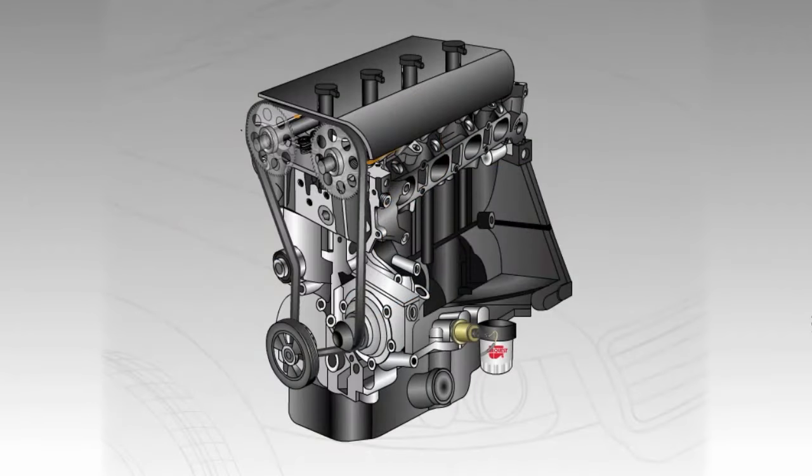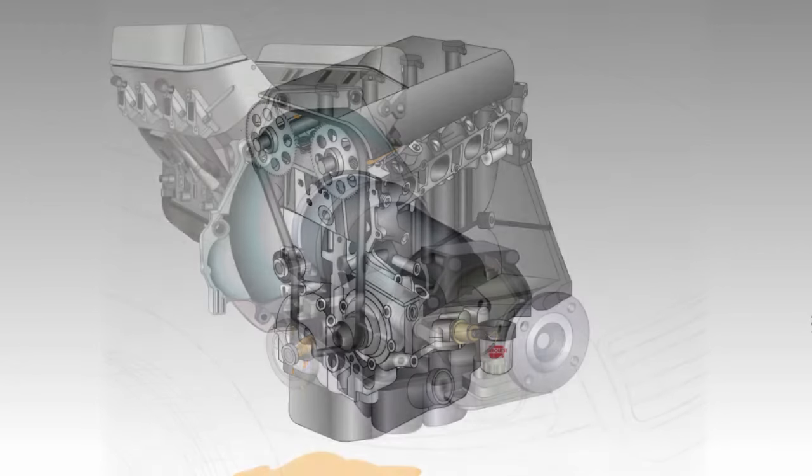A leak from the camshaft or crankshaft seal will produce drips from the front of the engine. The timing cover will usually need to be removed to determine which seal is leaking. Camshaft seal leaks normally come from higher up on the engine and crankshaft seal leaks from lower down, although the moving timing belt may distribute the oil inside the timing cover, making it difficult to determine the source.